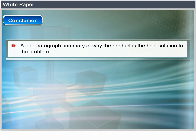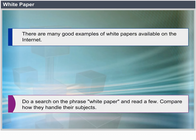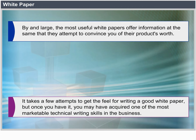Conclusion: A one-paragraph summary of why the product is the best solution to the problem. There are many good examples of white papers available on the internet — do a search on the phrase 'white paper' and read a few; compare how they handle their subjects. By and large, the most useful white papers offer information at the same time that they attempt to convince you of their product's worth. It takes a few attempts to get the feel for writing a good white paper, but once you have it, you will have acquired one of the most marketable technical writing skills in the business.